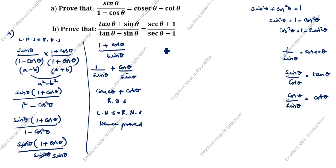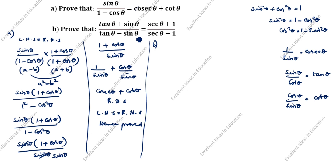This was the first sum. Now the second sum: prove that tan theta plus sin theta divided by tan theta minus sin theta is equal to secant theta plus 1 divided by secant theta minus 1. Tan theta — how will we write it? Tan theta is sin theta by cos theta.